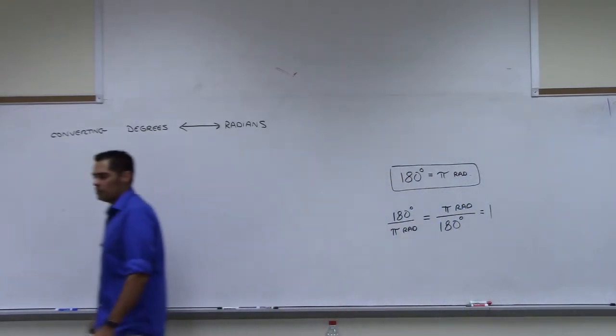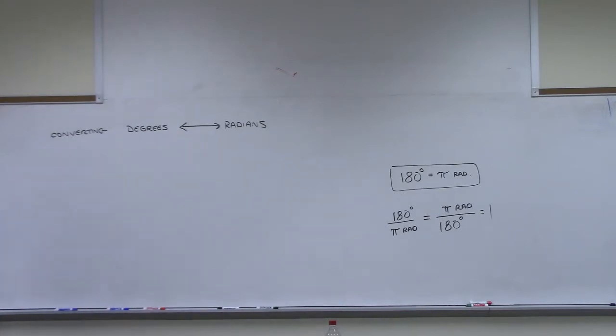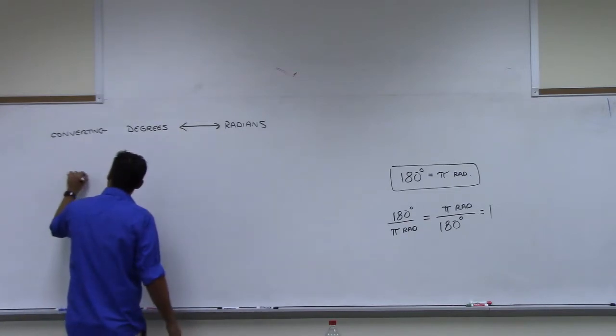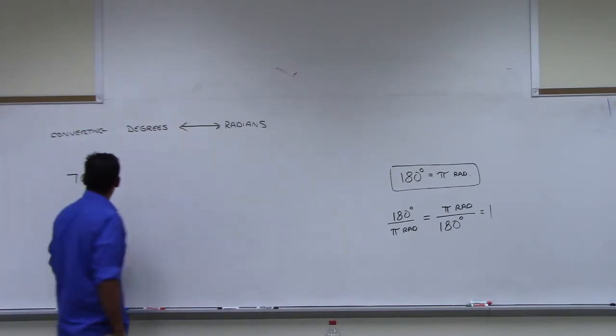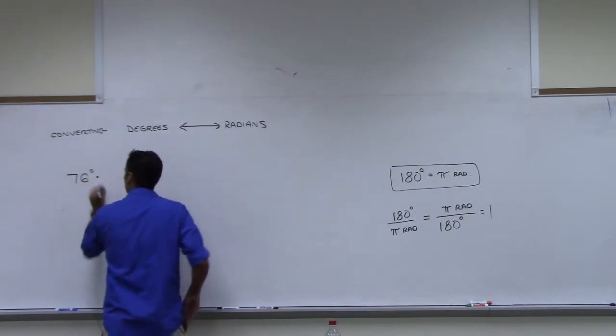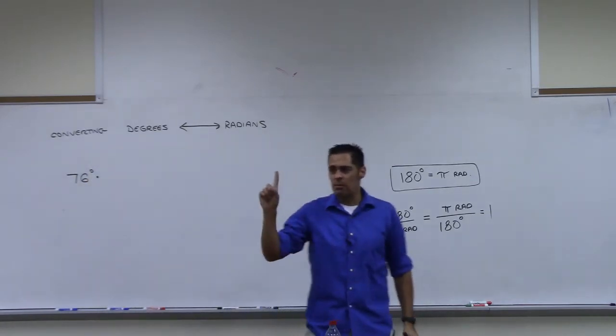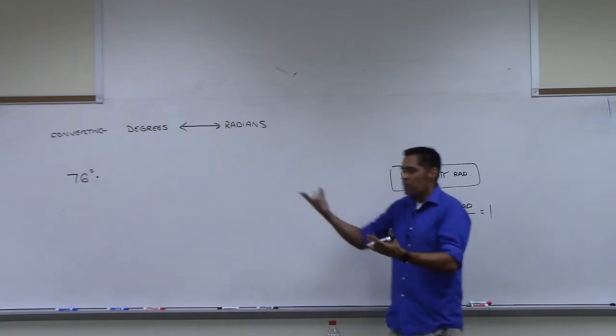Somebody give me an angle in degrees. Make it reasonable. 76 degrees. Okay, 76 degrees. Let's convert that to radians. What quadrant are we in? We're in the first quadrant, because it's less than 90. That means that my answer should be smaller than pi over 2. Because pi over 2 is straight up and down.